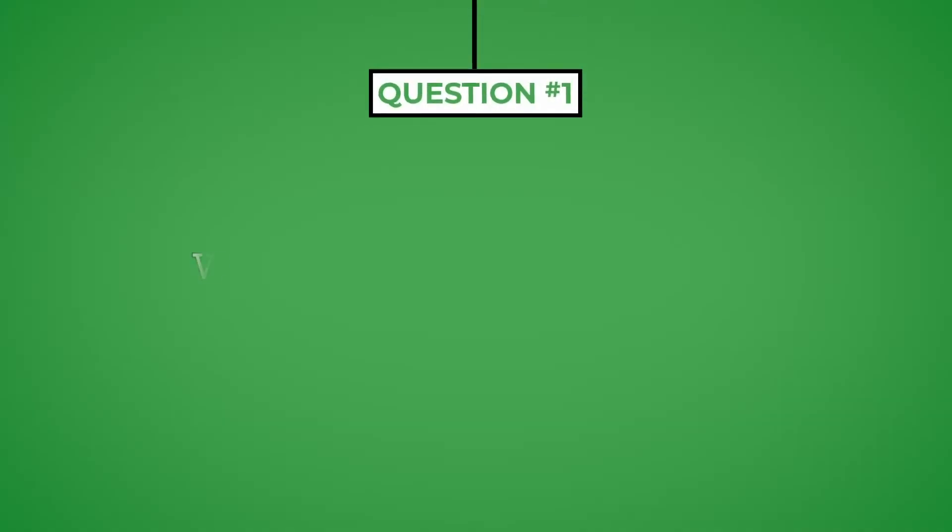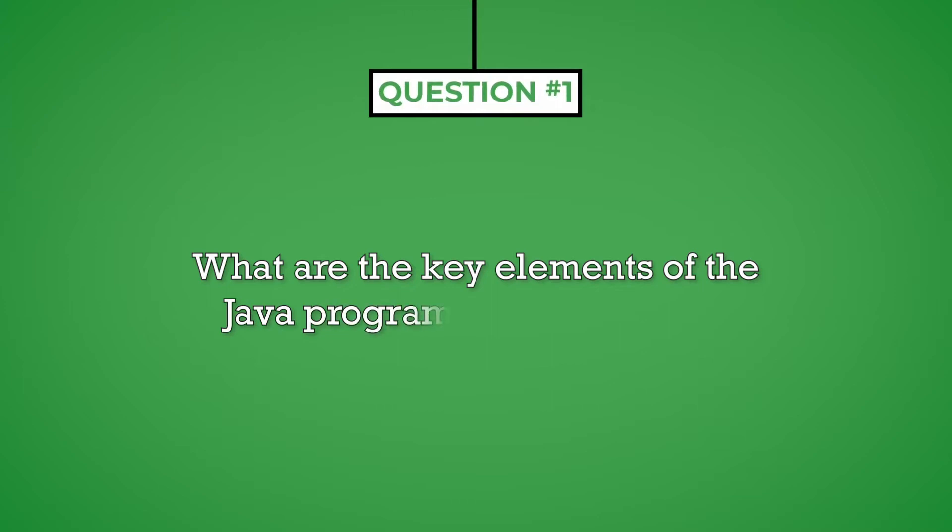Question number one: What are the key elements of the Java programming language? This is the type of question an interviewer will use to begin the conversation, learn more about your background, and collect information they can use throughout the interview. This question also provides you the opportunity to direct the interview towards a subject area that you are familiar with and comfortable responding to questions about. Throughout the interview, keep your answers brief and to the point. This will encourage the interviewer to ask follow-up questions about the same topic or move on to a new subject.